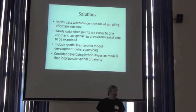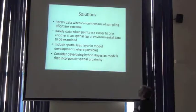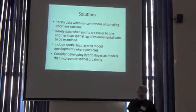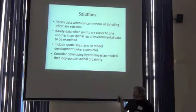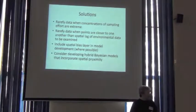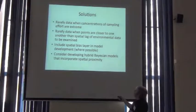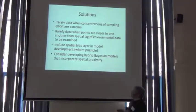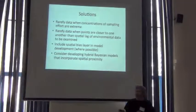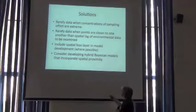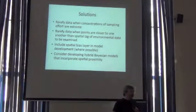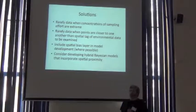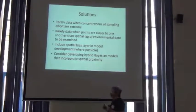So solutions to deal with, let's just say, crazy biases. When concentrations of sampling effort are extreme, like that smallmouth bass example, you can just rarify. You can just artificially reduce the density of records from those over-sampled regions. When you have spatial autocorrelation and clumped points, you can rarify the data, like I did in the ascaris example. You can rarify the data to take into account what's called the spatial lag, that area over which points are not independent. Probably best is you can include a spatial bias layer in model development. We'll show you where that goes in MaxEnt.